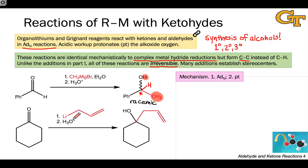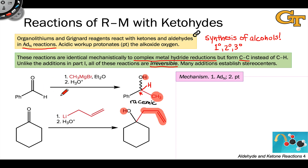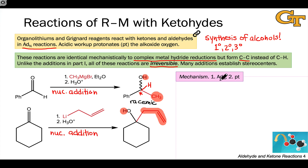Similarly, in the second case, using an allyllithium organometallic reagent, we add the elements of propene to the starting ketone — the nucleophilic carbon and the attached alkene group, as well as the hydrogen, which goes on during acidic workup. So from the aldehyde or ketone's perspective, both of these reactions are nucleophilic additions. Mechanistically, the key elementary step is ADN — nucleophilic addition to a polarized pi bond.